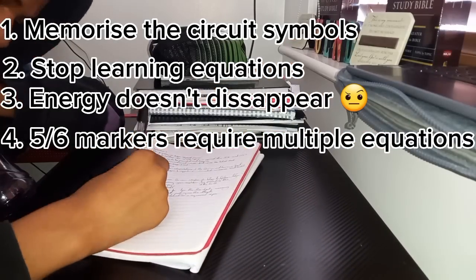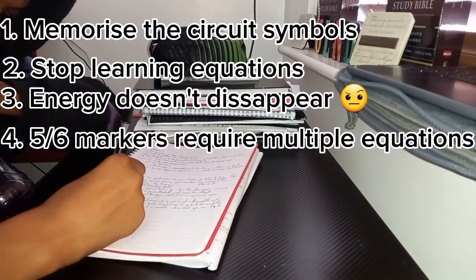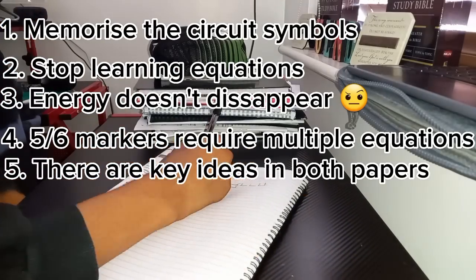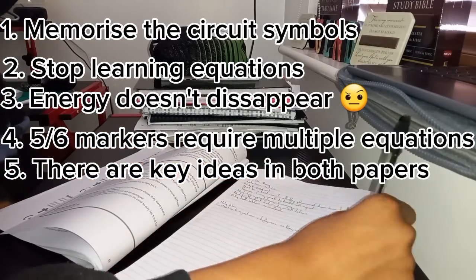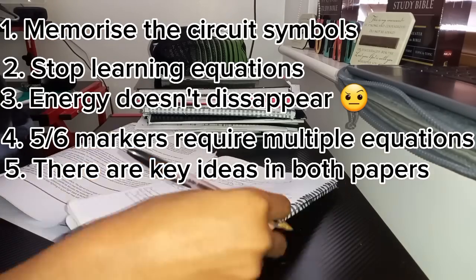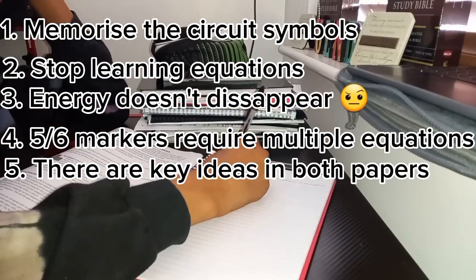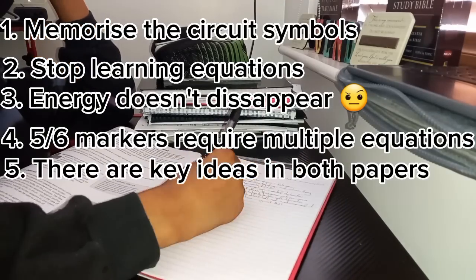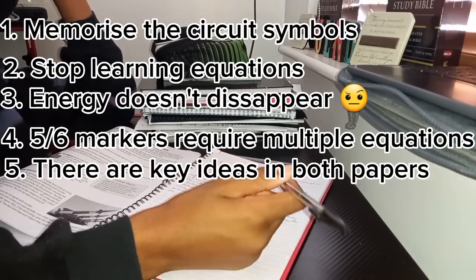This tip technically applies to all sciences, but just remember that there is some content from paper two that can show up in paper one. It's part of the key ideas part of the specification. Make sure you just look over that quite briefly just to make sure you're not blindsided by any random topics that come up and you think, well, this should be in paper two, why is it here, or vice versa.